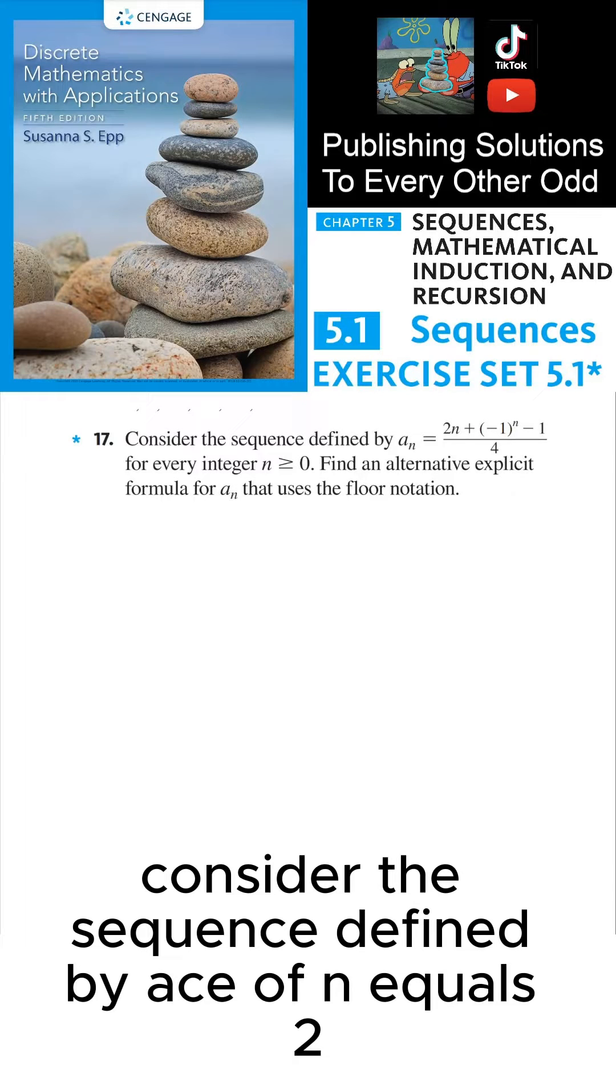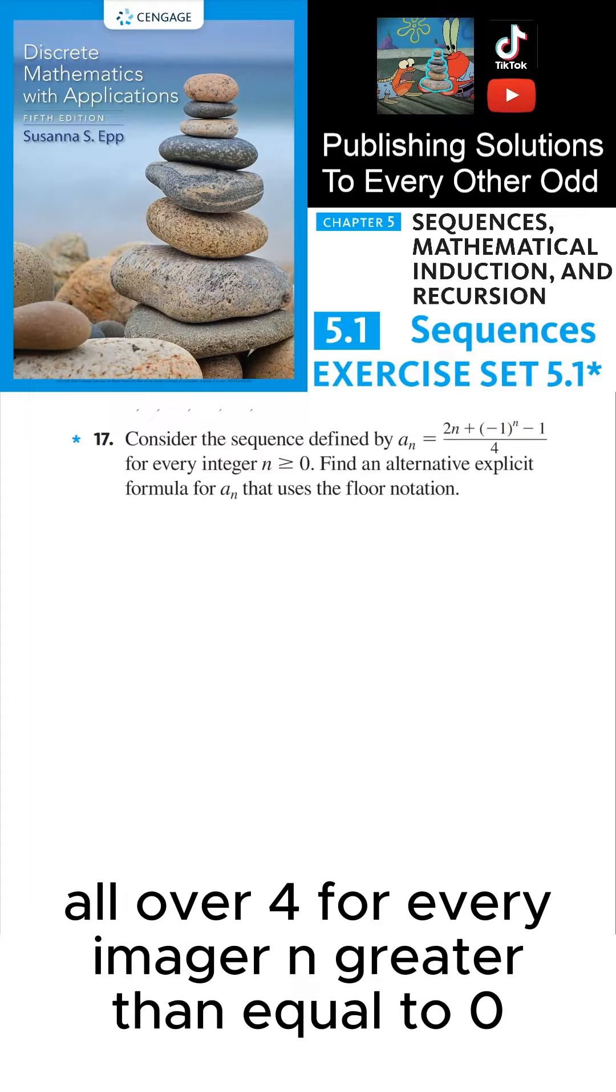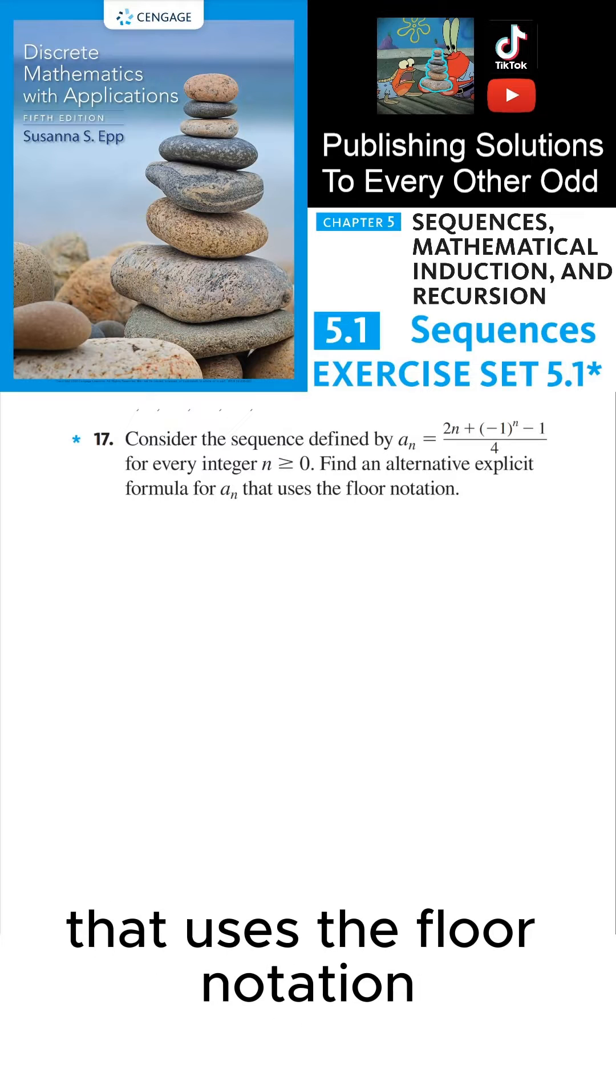Consider the sequence defined by a_n = (2n + (-1)^(n-1))/4 for every integer n ≥ 0. Find an alternative explicit formula for a_n that uses the floor notation.